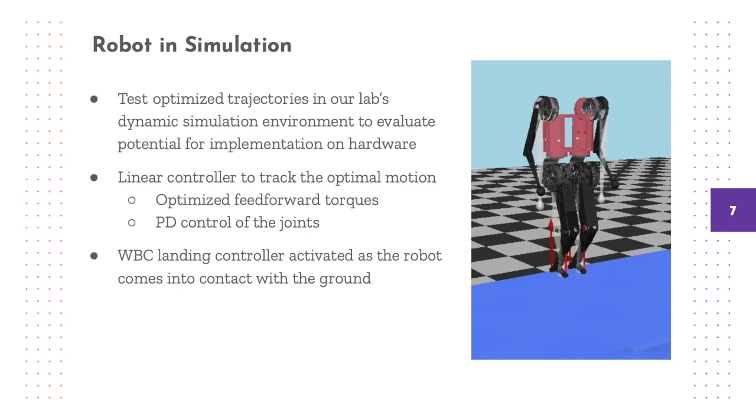Because the trajectory optimization generates purely open-loop trajectories, in the simulation we implement a linear feedback controller that, in addition to commanding the optimized feedforward torques, also does PD control of the joints so that they match the optimized joint state trajectories.